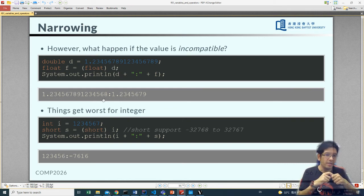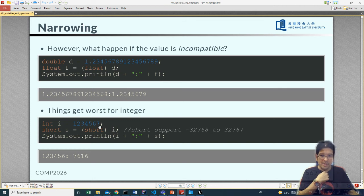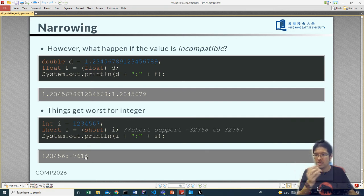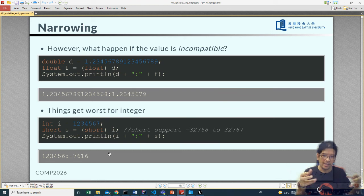Now, if it comes to an integer, that could be even worse. So for instance, you have a number 1234567 here, integer, and you want to cast it into a short, where a short supports the number from negative 32768 to 32767. And if you convert this number to a short, what will happen is it will just go crazy. A positive number goes to negative number. The reason is just because of this casting, it will chop out the high digits out, and then the remaining things will have a raw representation.